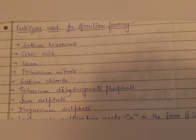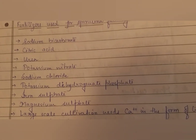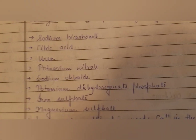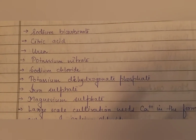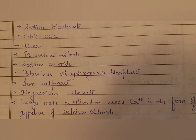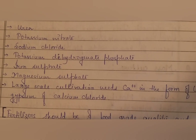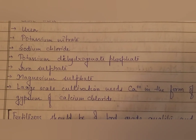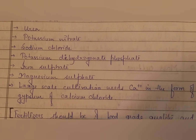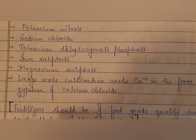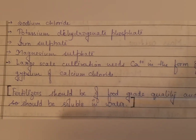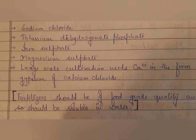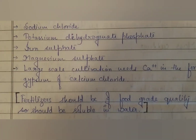The fertilizers used for spirulina farming include sodium bicarbonate, citric acid, urea, potassium nitrate, sodium chloride, potassium dihydrogen phosphate, iron sulfate, and magnesium sulfate. Large-scale cultivation also needs calcium in the form of lime, and gypsum or calcium chloride. Fertilizers should be of very good quality and soluble in water; if not of good quality, they may produce toxicity in the culture.